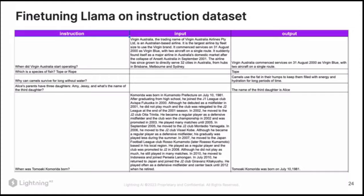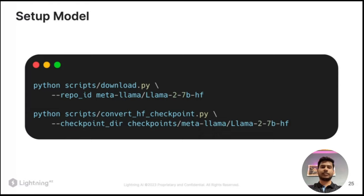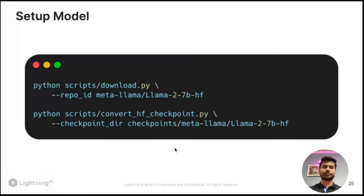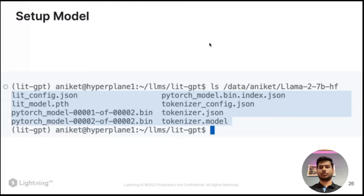The first step is to download the model. In LitGPT you will see scripts to download and convert the weights to LitGPT format. You can download most models from Hugging Face — the repo ID here signifies what you see on Hugging Face Hub, like meta-llama organization and the model name llama-2-7b. Then we convert these weights into LitGPT format using the second script. After inspection, the downloaded files contain the model .pth and tokenizer configuration — everything required to load your model and tokenizer.